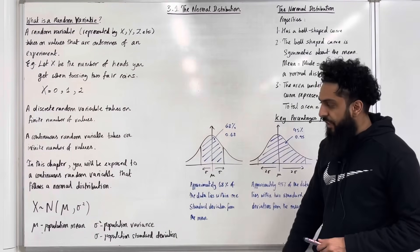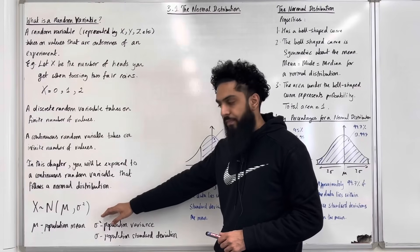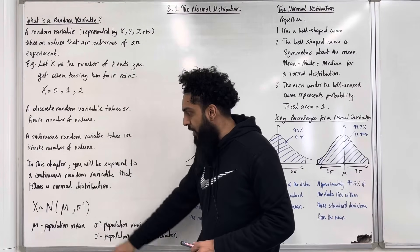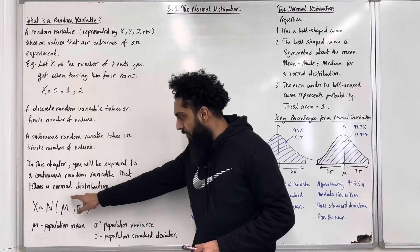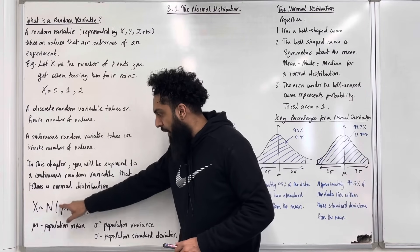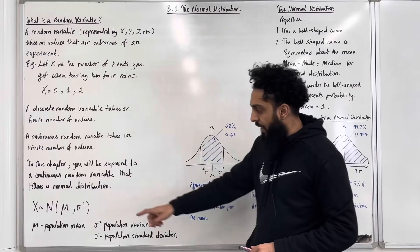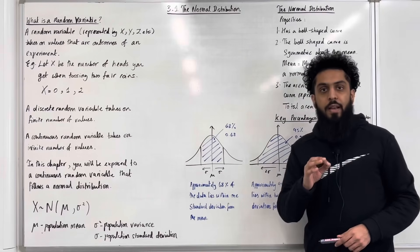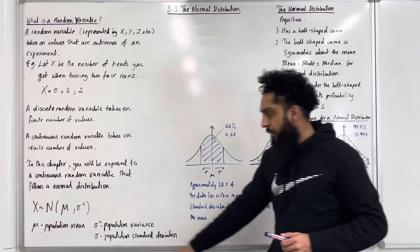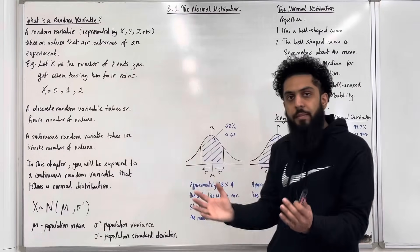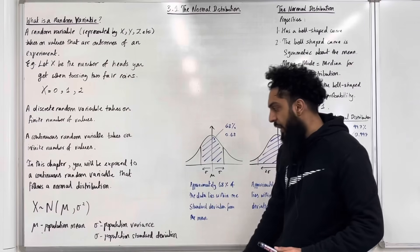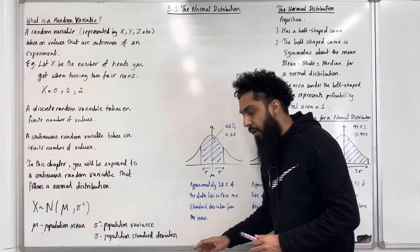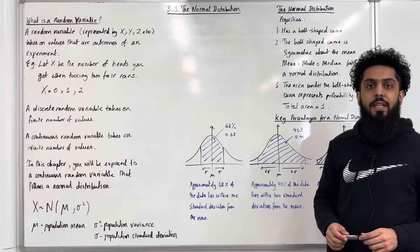This distribution is called the normal distribution. Have a look at this mathematical notation: X squiggle N. This means X takes on a normal distribution. This is a Greek letter called mu, which represents the mean. Sigma squared represents the variance. More specifically, mu represents the population mean, sigma squared represents the population variance, and sigma represents the population standard deviation.